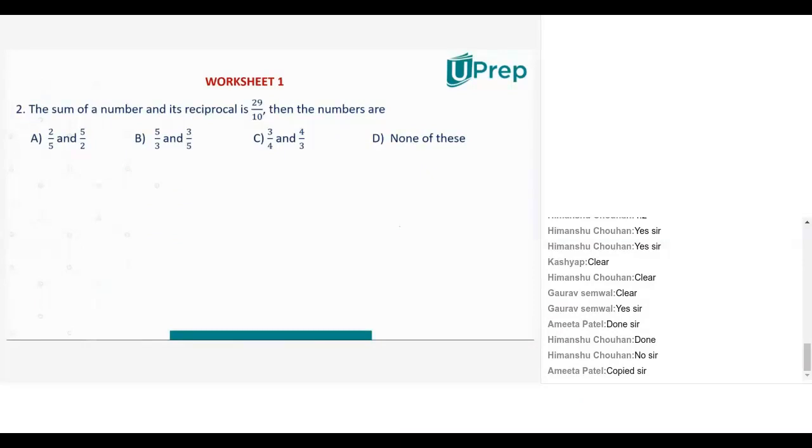The sum of a number and its reciprocal is 29 by 10. Then we will find the numbers.